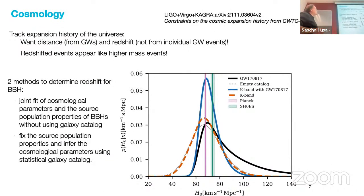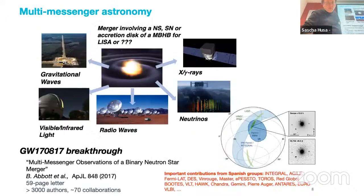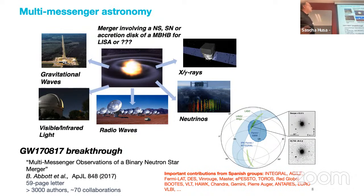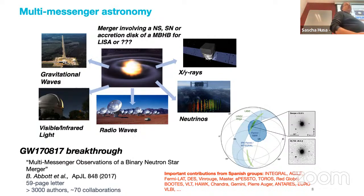Another very interesting application is tests of general relativity — you can do all kinds of things not possible before. Another application is cosmology: tracking the expansion history of the universe, which is easiest with electromagnetic counterparts, but even with just black holes you can correlate them with galaxy catalogs. I'll completely focus on the modeling of the gravitational wave signal, but multi-messenger astronomy — seeing electromagnetic signals, neutrinos, or other things alongside GW events — allows one to learn much more, kicked off by the binary neutron star merger discovery.